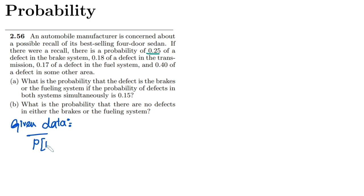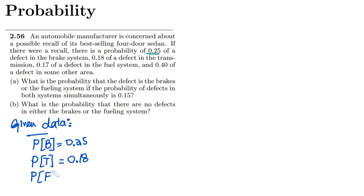Similarly, 0.18 is the probability of a defect in the transmission, so I am going to write it as capital T, and that is 0.18. And 0.17 is the probability of a defect in the fuel system, written as F, and that is 0.17. And 0.40 is the probability of a defect in some other area, written as O, and that is 0.40.